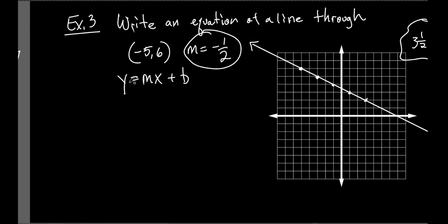I know the slope is negative 1 half, I know x is negative 5, I know y is 6 — so I can find b, the y-intercept. If I drew the graph correctly, the y-intercept should come out to be 3 and a half, or 7 halves. Let's see if it does. So I plug in: y equals 6, m equals negative 1 half, x equals negative 5 over 1 — I put it over 1 because I'm multiplying by a fraction. Plus b.